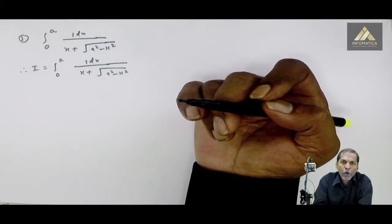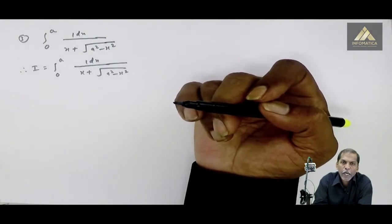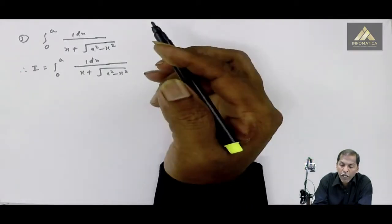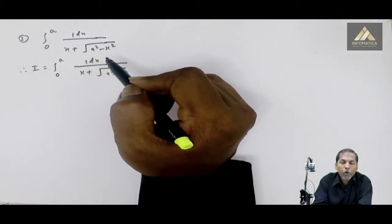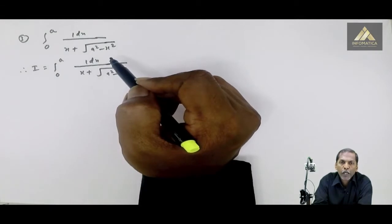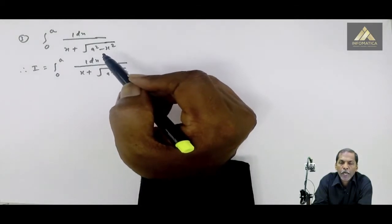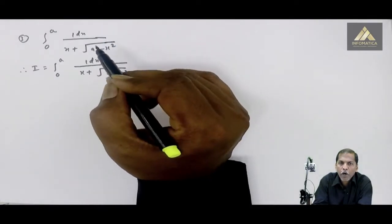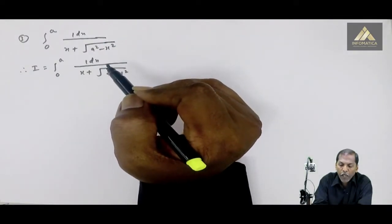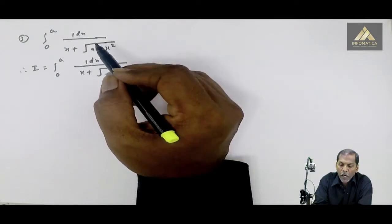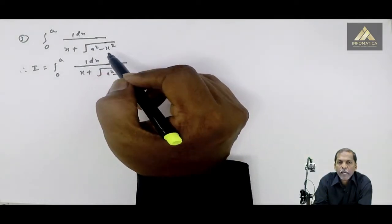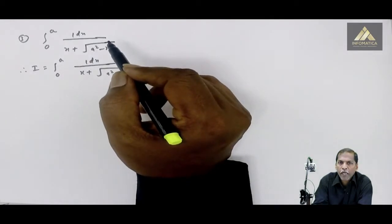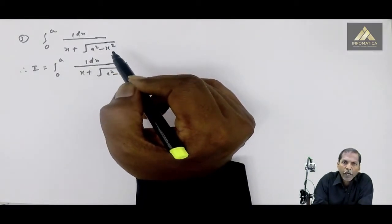If we have a complication with the square root part — if we have square root of a square minus x square, then we can put x equal to a sin theta or x equal to a cos theta. Similarly, if the term inside the root is a square plus x square, then we replace with x equal to a tan theta or x equal to a cos theta.